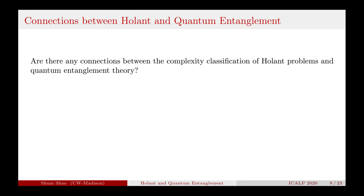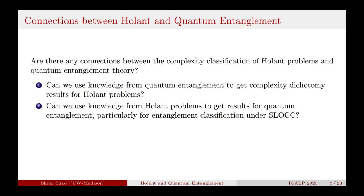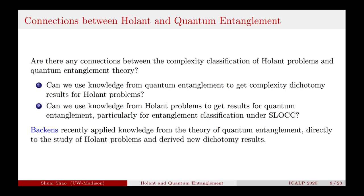In this paper, we explore the connections between the complexity classification of Holant problems and quantum entanglement theory. This question has two parts: can we use knowledge from quantum entanglement to get complexity dichotomy results for Holant problems? And can we use knowledge from Holant problems to get results for quantum entanglement, particularly for entanglement classification under SLOCC equivalence? The answer to the first question is known to be yes — Backens applied knowledge from quantum theory to get new dichotomy results for Holant problems.